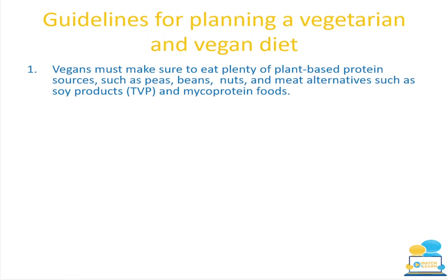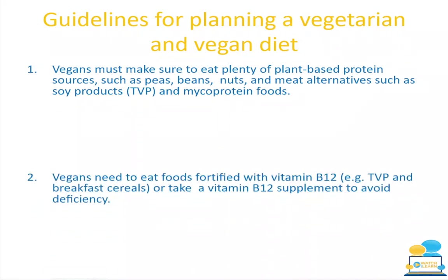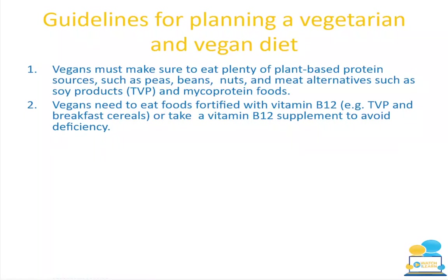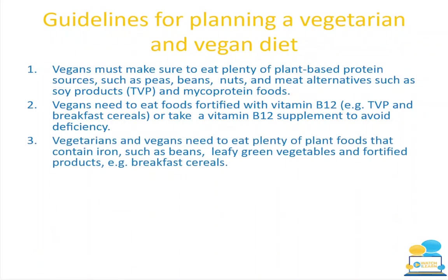A pescatarian is a vegetarian who does eat fish products. Vegans need to eat foods fortified with vitamin B12, found in textured vegetable proteins, breakfast cereals and fortified milks, or take a B12 supplement. Vegetarians and vegans need plenty of plant foods high in iron, because the iron in vegetables is non-heme iron. Humans absorb heme iron more efficiently, so they need to consume more iron-rich foods like beans, leafy green vegetables and fortified products.